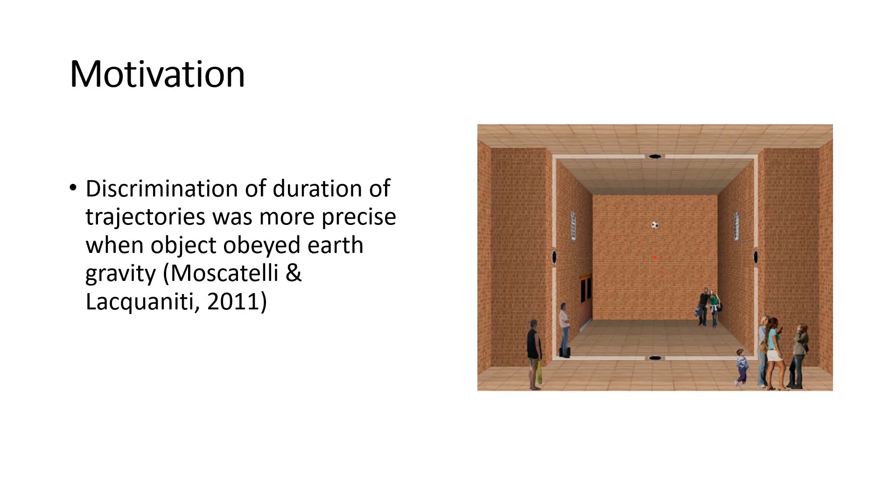showed participants linear motion in 2D embedded in this little pictorial background here on the right. That motion was either congruent with earth gravity, so the ball here was falling downwards with an acceleration of 9.81 meters per square second, or it could fall up with the same acceleration. The participants were then asked to judge the duration of this motion and it was found that the duration was judged more precisely when the motion obeyed earth gravity than when it didn't.